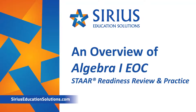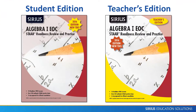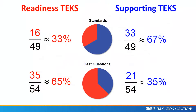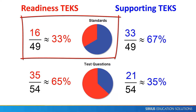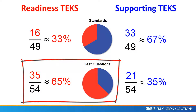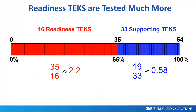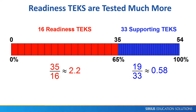Welcome to an overview of the series Algebra 1 EOC STAR Readiness Review and Practice, an interactive workbook that provides systematic instruction and practice in the Readiness TEKS. We focus on the Readiness TEKS because there are only one-third of the standards but make up two-thirds of the test questions. Readiness TEKS each appear two or three times on the STAR test, so each Readiness TEKS is worth about 3.8 supporting TEKS.